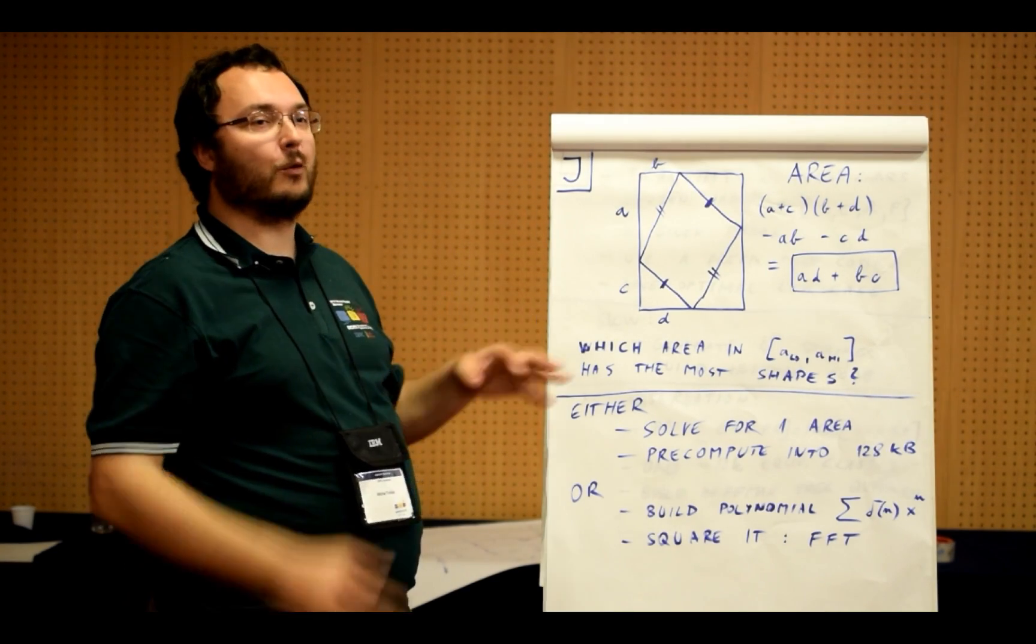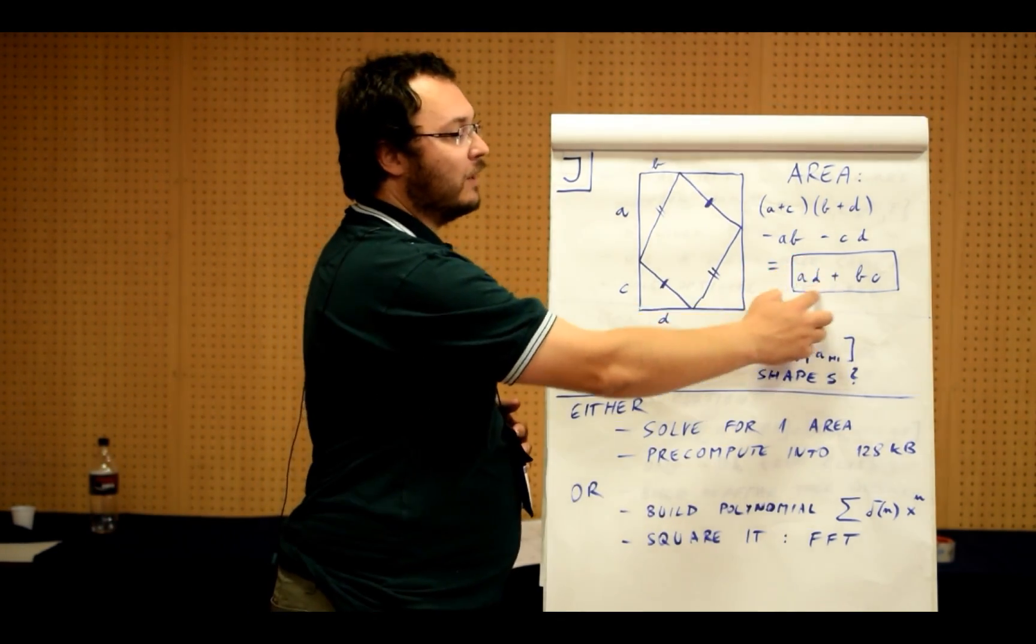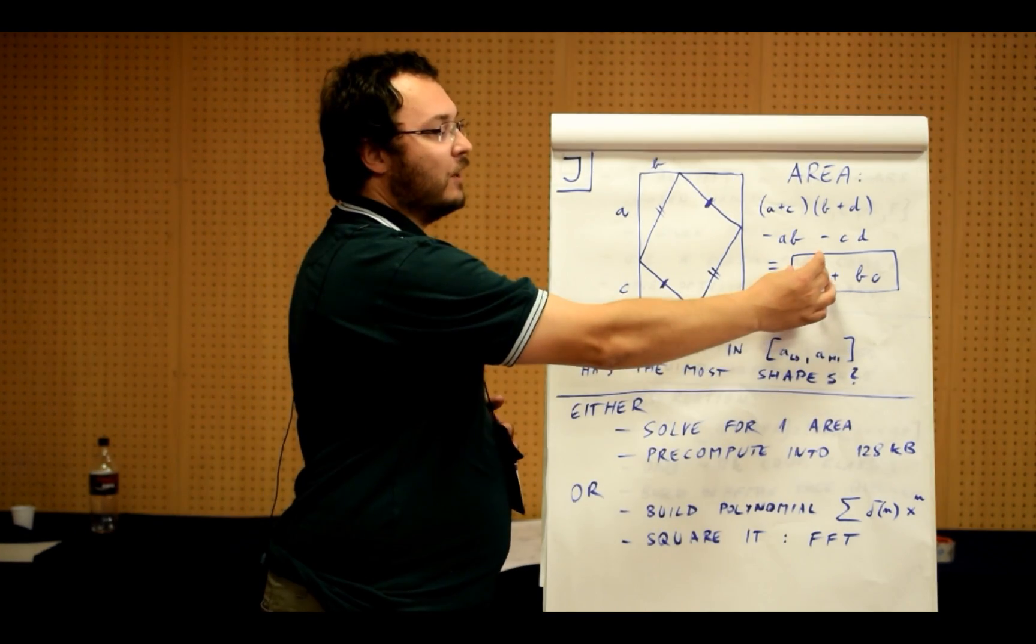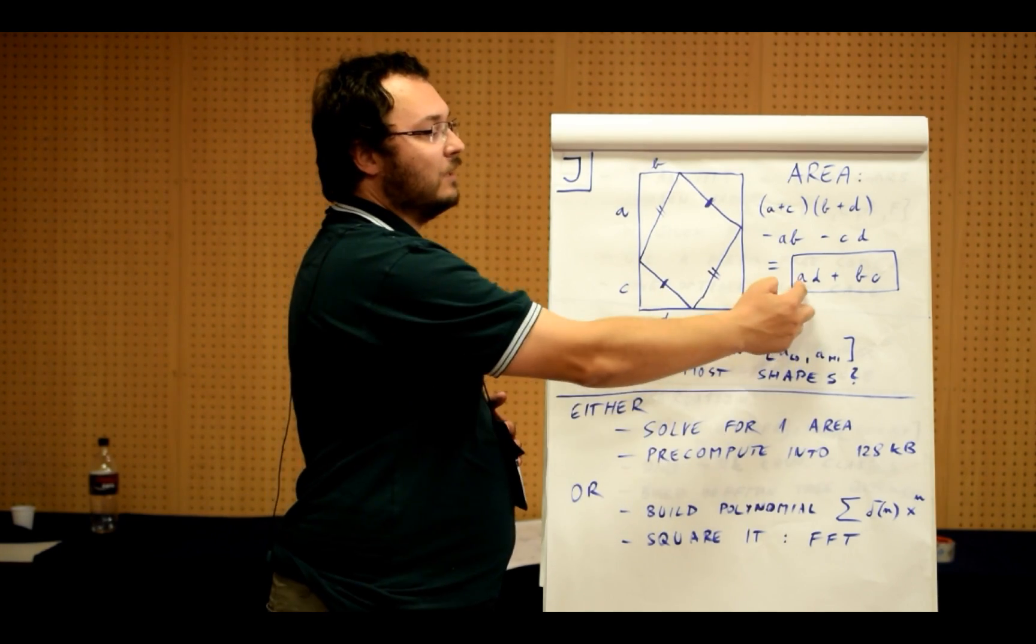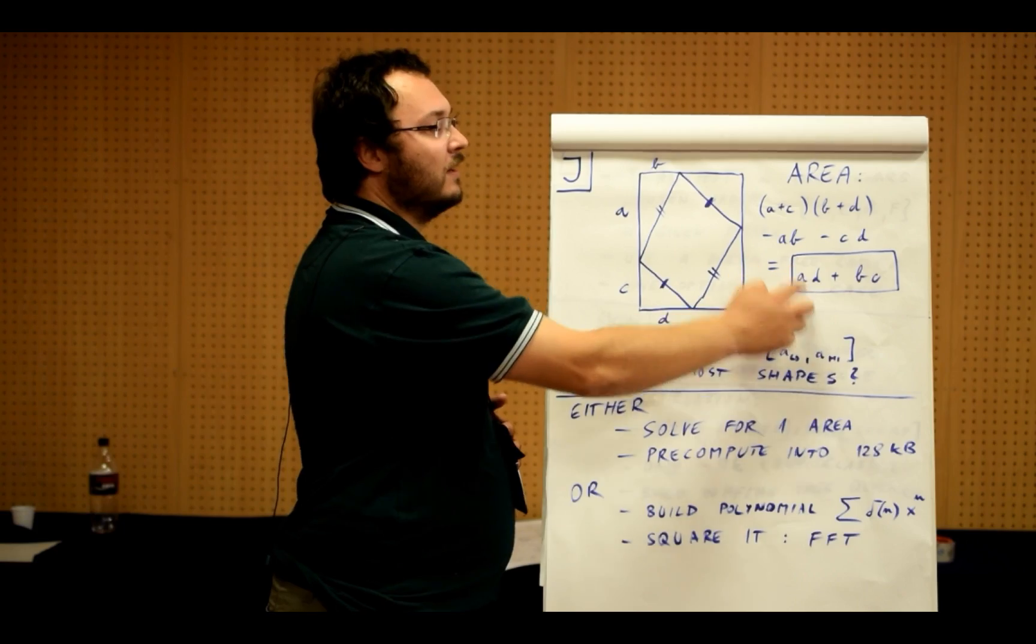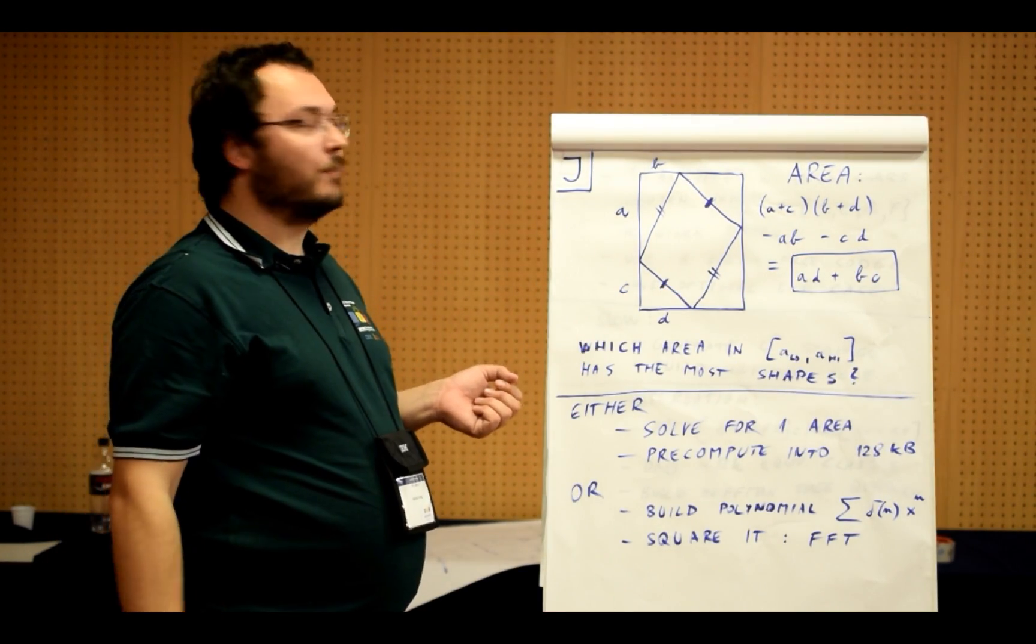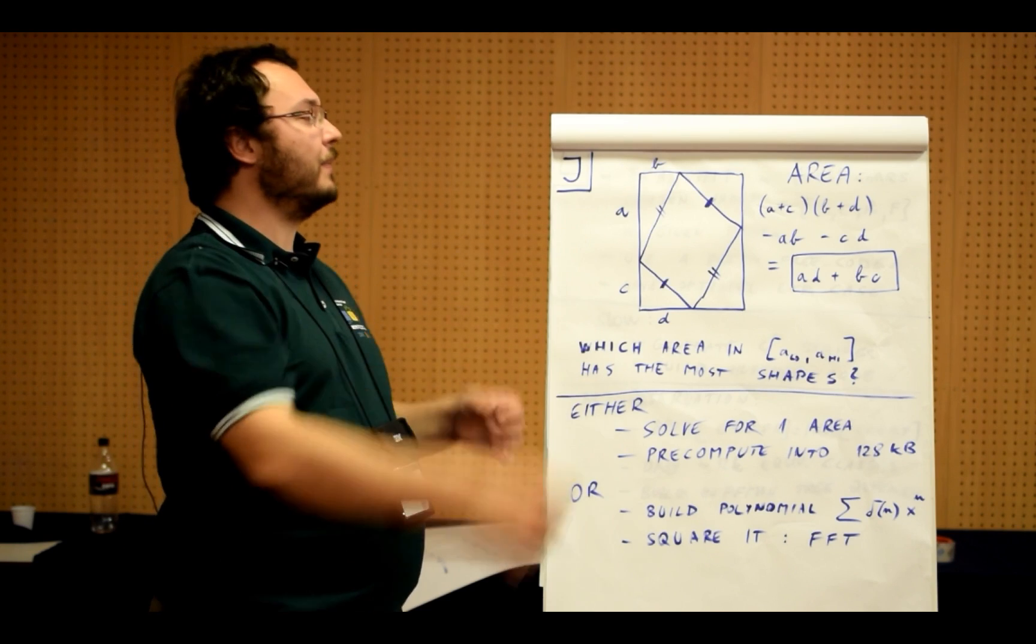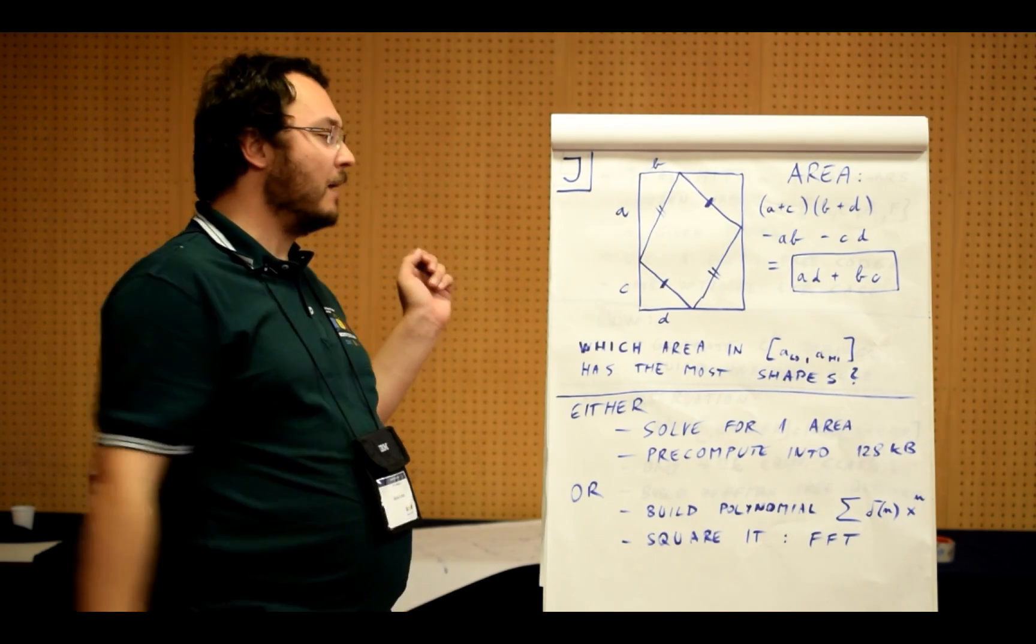So if we were solving this problem for one fixed area, what you can do is you can iterate over all values of this, and each time you take this value and you count the number of ways it can be divided into a product of two numbers. So this is the number of divisors of this value. You take the number of divisors of this value and you multiply those two counts together and you add it up and you get the result.